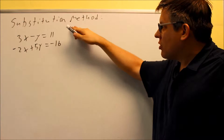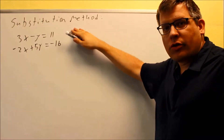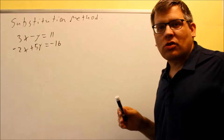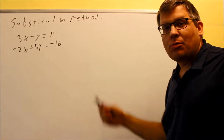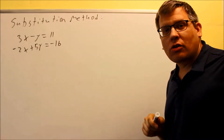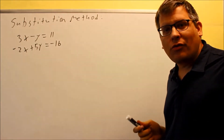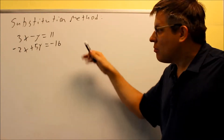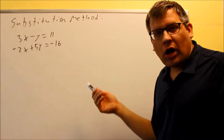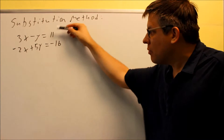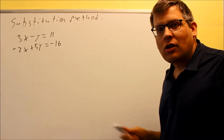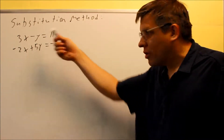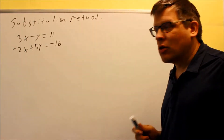The substitution method is the first method we'll look at. What this involves is you're going to take one of these equations, solve for one of the variables, and plug it back into the other equation. Basically we're eliminating one of the variables so we can solve for either x or y. For the substitution method, you want to look for what variable is the easiest one to solve for.